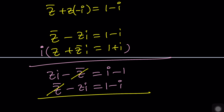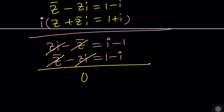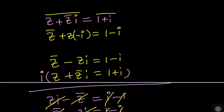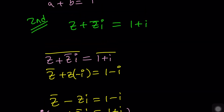When we add the two equations, everything cancels out — we get zero equals zero. This confirms what we found with the first method: the two equations are the same, so Z can be anything as long as it satisfies the first equation. There are infinitely many solutions — anything that satisfies the first equation works.